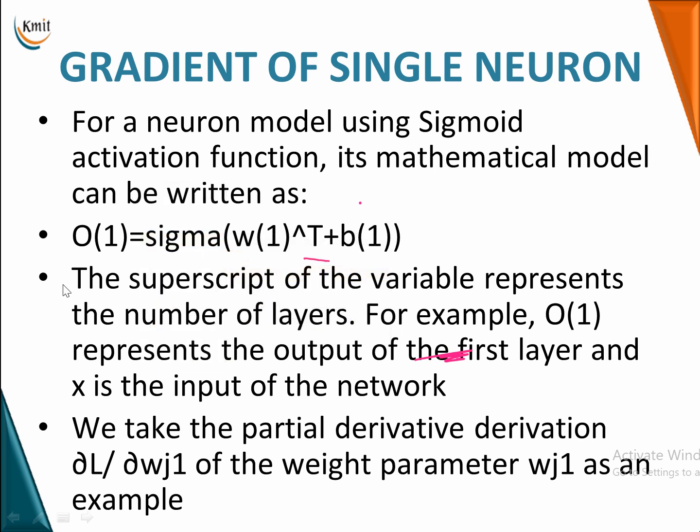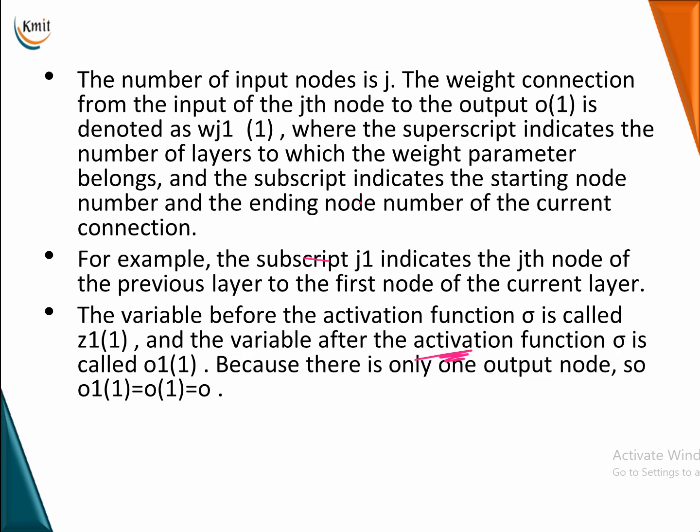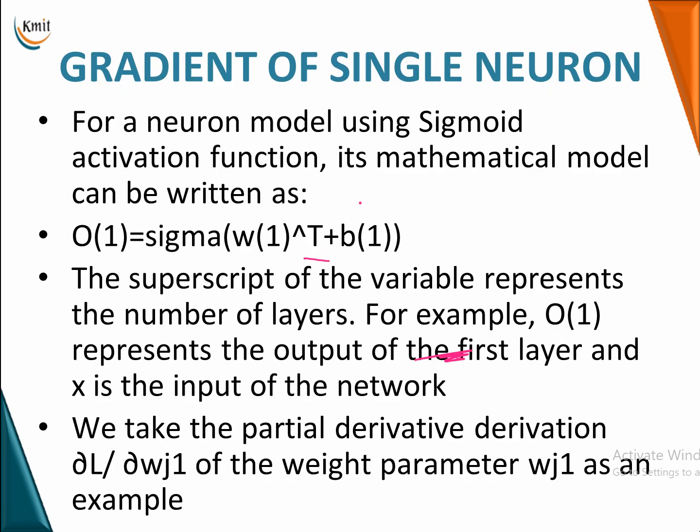We are talking on gradient of single neuron. For a neuron model which is using a sigmoid activation function — typically we can use any activation function suitable for your application — but for ease of understanding for this particular model, I have chosen a single neuron model with a sigmoid activation function.